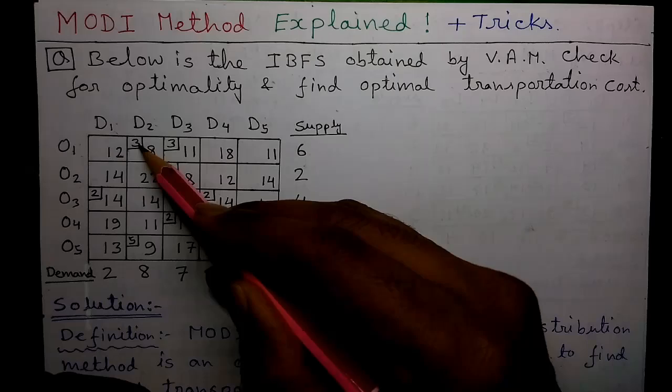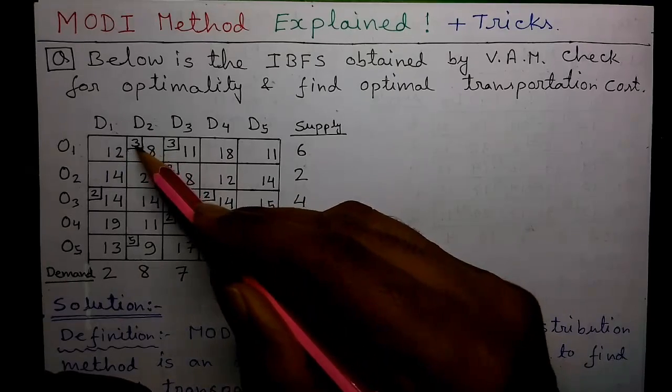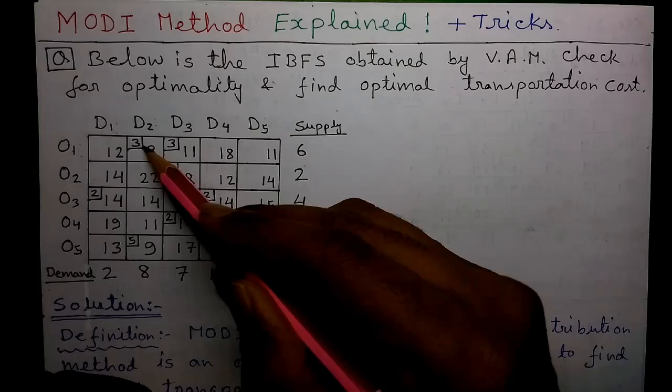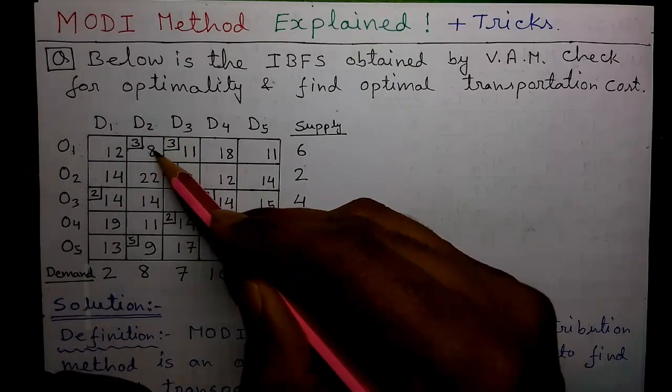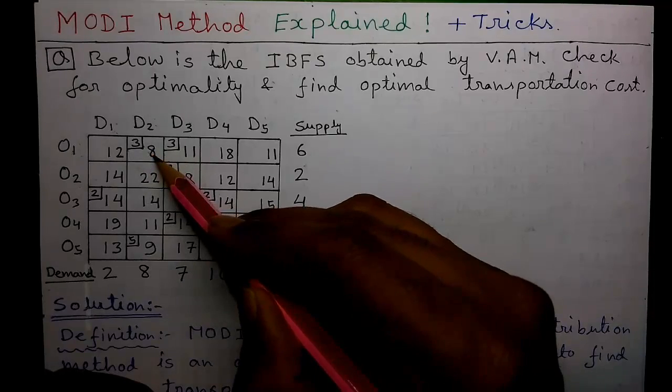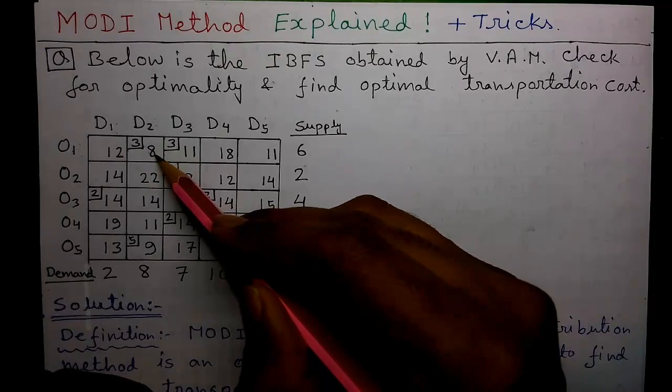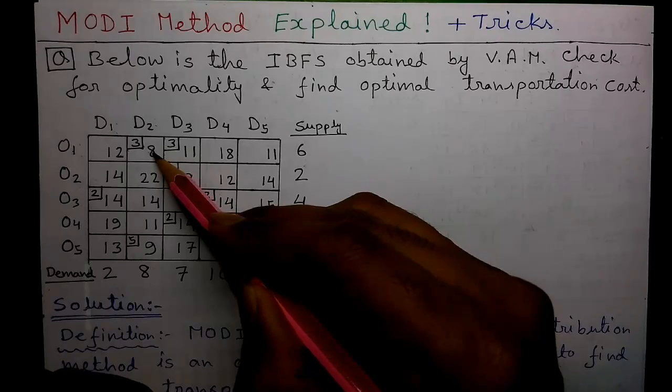And the meaning of allocation is that we have allocated 3 units of goods for the cell O1, D2 at the cost of 8 per unit. So for this cell, the total transportation cost will be 3 into 8, 24 units.